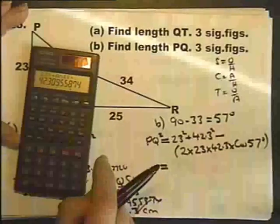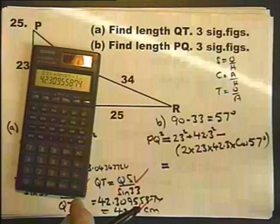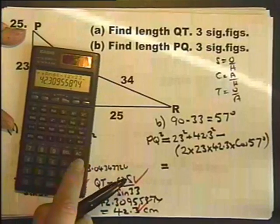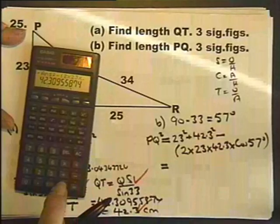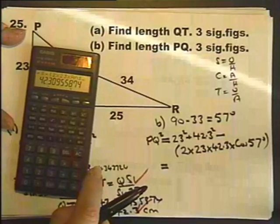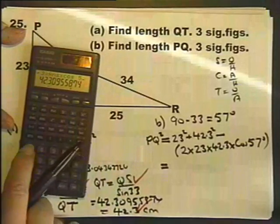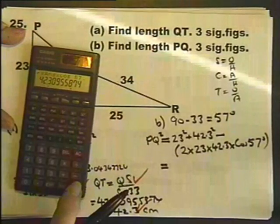plus the answer that's still there squared minus, very important to do these brackets, open brackets, 2 times 23 times the answer that I had previously times the cosine, making sure it's in degree mode,